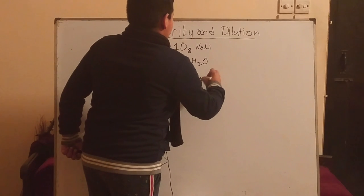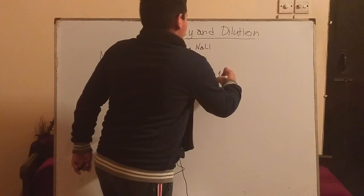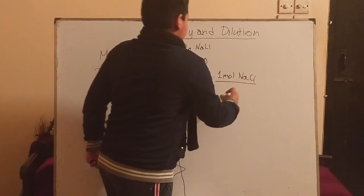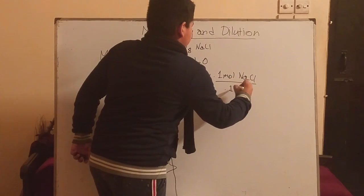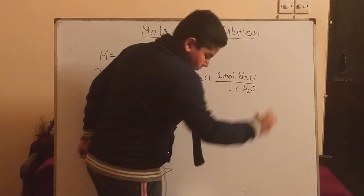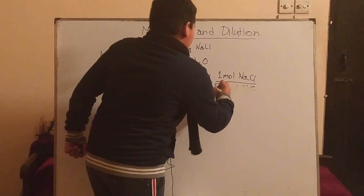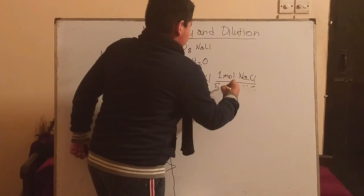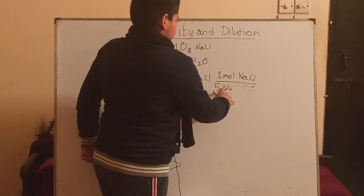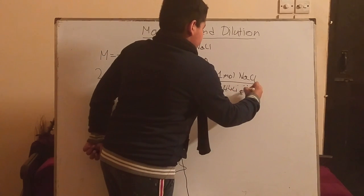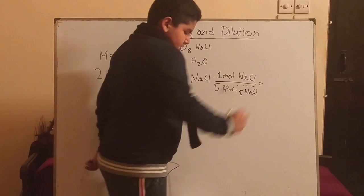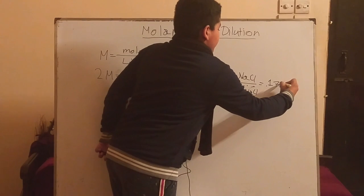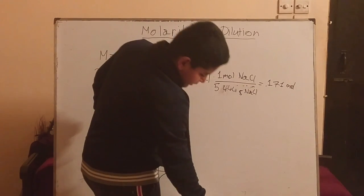10 grams of sodium chloride times one mole of sodium chloride divided by 58.44 grams of sodium chloride, and all of this will be equal to 0.171 moles of sodium chloride.